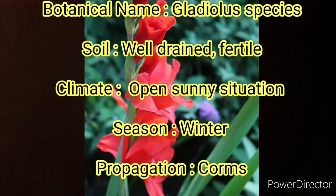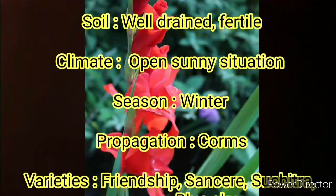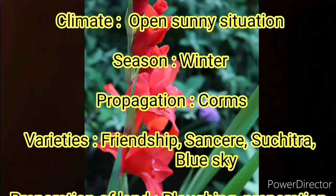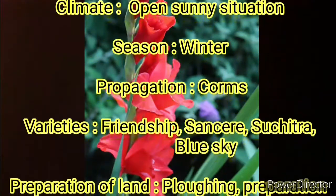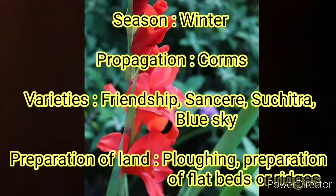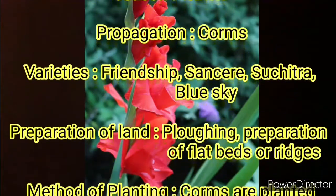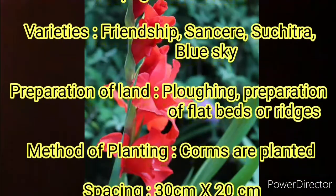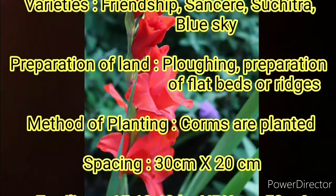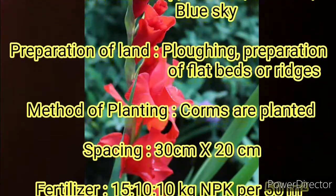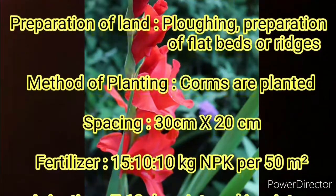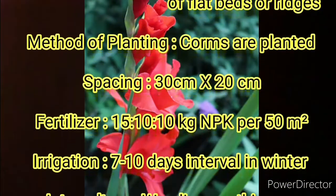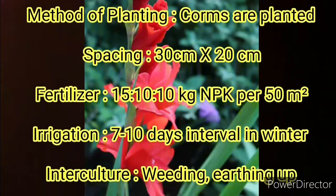Varieties are Friendship, Sansari, Suchitra, and Blue Sky. Preparation of land can be done by plowing and by preparing flatbeds or ridges. In case of method of planting, corms are planted. Spacing should be 30cm x 20cm and the fertilizer dose is 15 x 10 x 10 kg NPK per 50m².